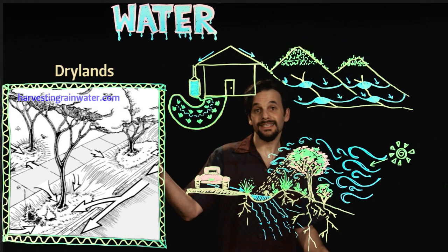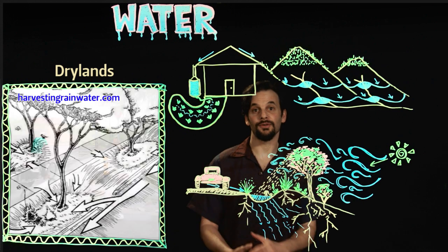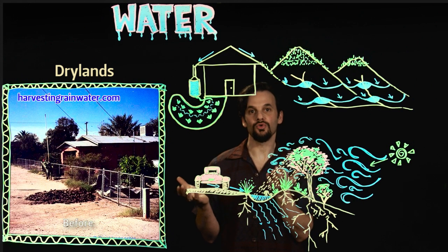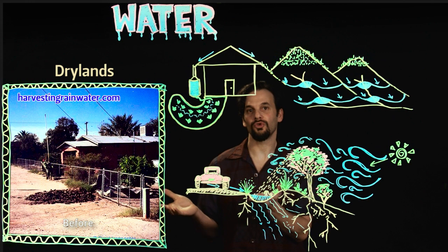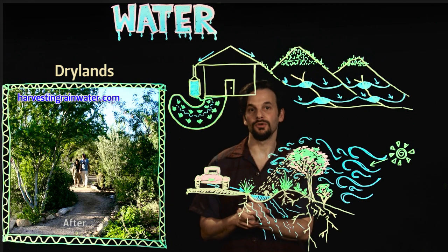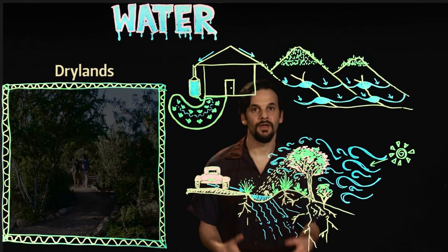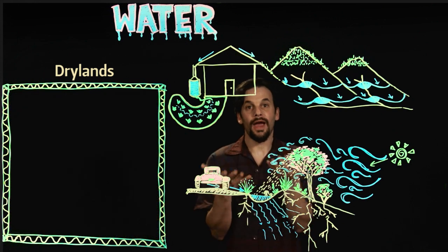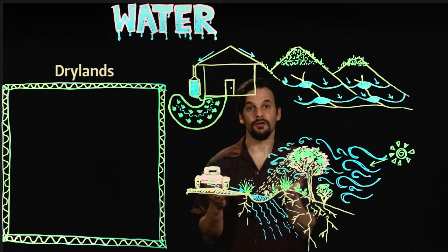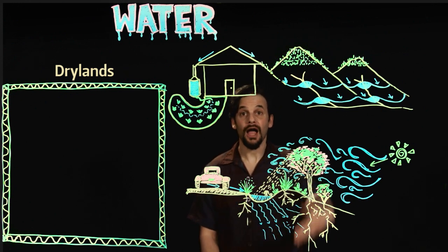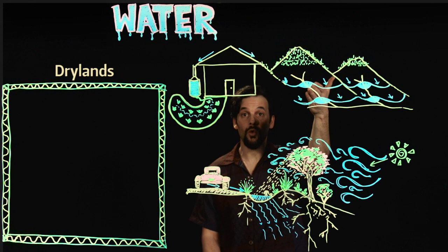We can see this at the urban scale at the house of Brad Lancaster in Tucson, Arizona, where he created a Sonoran Desert forest in the heart of the city using these rainwater harvesting principles. The ground stays wetter for longer and it feeds a cycle of rehydration. We start by planting the water high up in the watershed and working our way down.